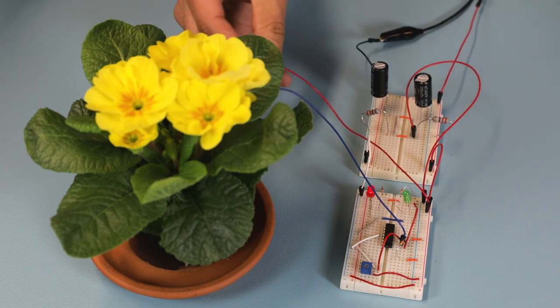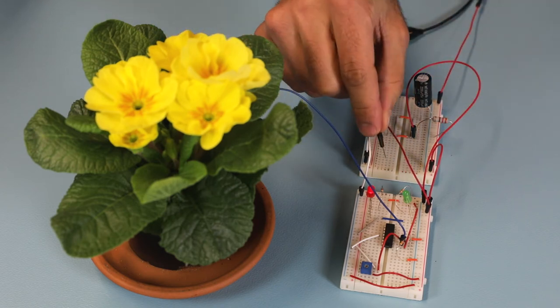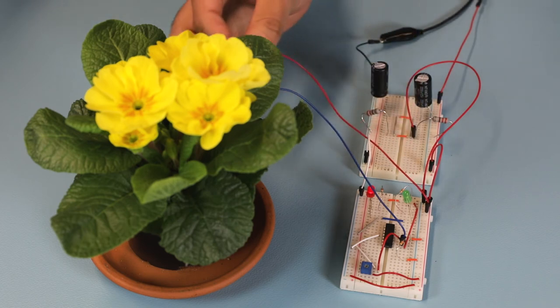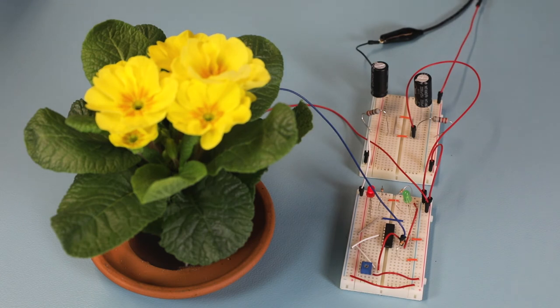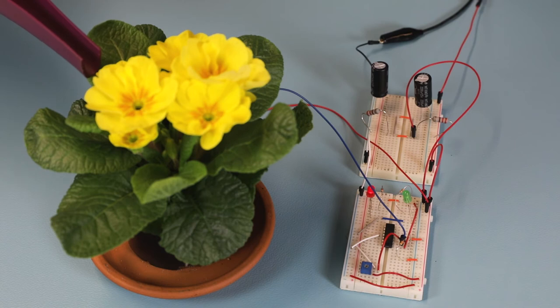When the ground is dry, the red light is on and the green light is off. When the ground is wet, the red light will go off and the green will go on.